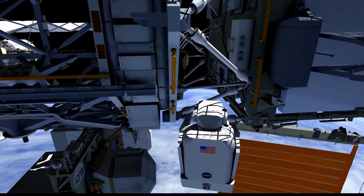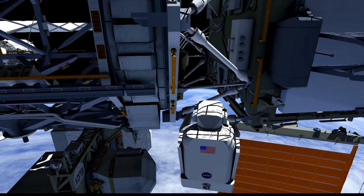Here we have Scott at the solar alpha rotary joint. He's going to install the jumper across the SARJ. This will complete the fill pipeline.